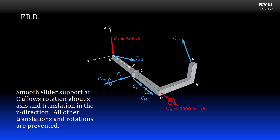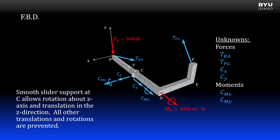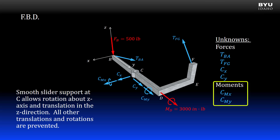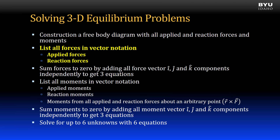Let's count up our independent unknowns. They are four reaction forces and two reaction moments for a total of six. We can solve for six unknowns with our six equations of equilibrium. The next step is to list all of our forces in vector notation.